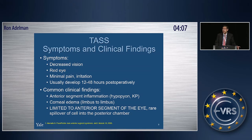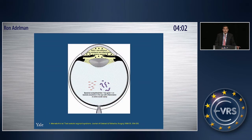In TASS, corneal edema is limbus to limbus. The highlight is that the inflammation is confined to only the anterior part of the eye. By definition, when we have vitritis, that becomes endophthalmitis. The key differentiator is finding vitritis to diagnose endophthalmitis.